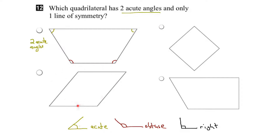Let's look at the next quadrilateral. This angle and this angle — the opposite angles — are both less than 90 degrees, so they are acute angles. And then these other angles are greater than 90 but less than 180, so they are obtuse angles. Again, this quadrilateral has 2 acute angles, so it is a possibility.